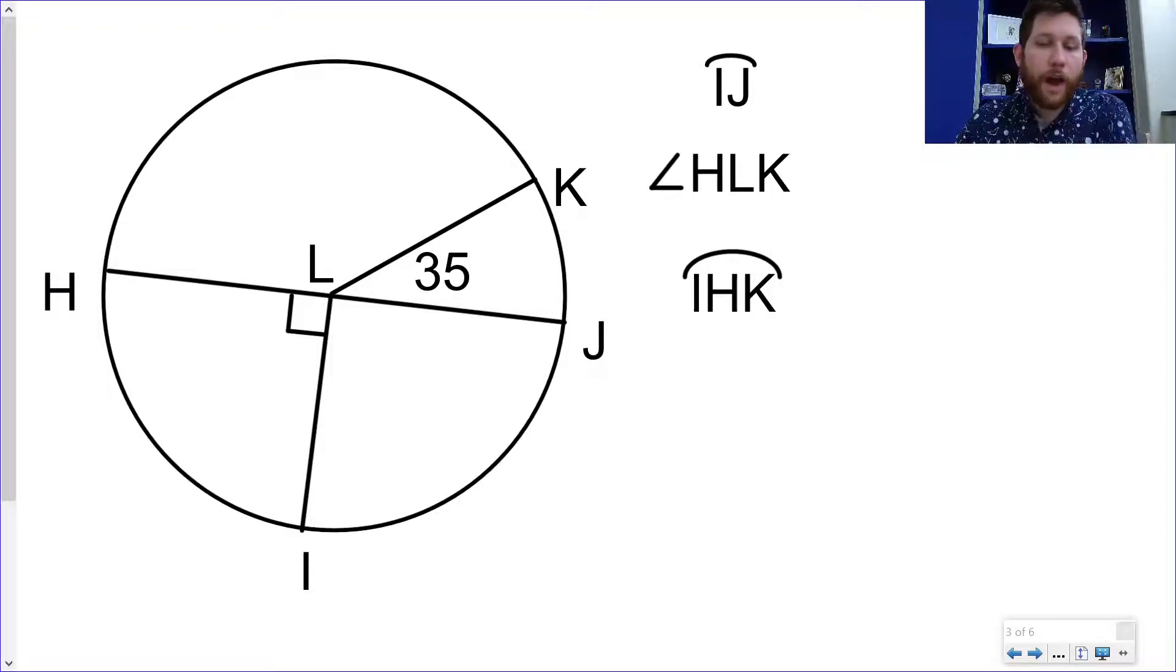So let's look at arc IJ. So again, notice L is at the center of my circle, so these are all central angles. I know that this is 90 degrees here, so this one over here is also going to be 90 because it needs to add up to 180. So that one right there is 90 degrees.